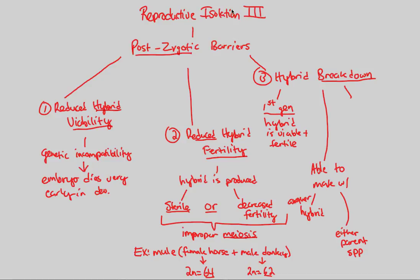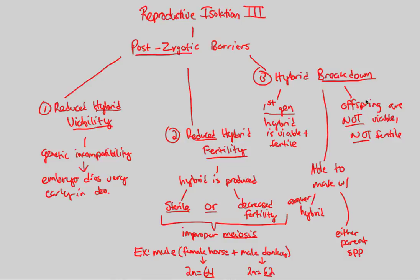Eventually, reproductive isolation asserts itself, indicating these two species should not be inter-specifically mating. When a first-generation hybrid mates with either another hybrid or a parent species, the resulting offspring are not viable and usually not fertile either. So the first-generation hybrid is okay, but the second and third generations have no chance of being alive. This is hybrid breakdown.